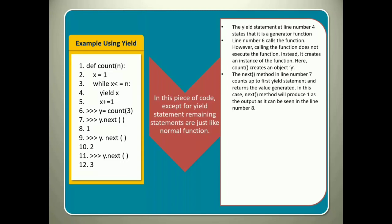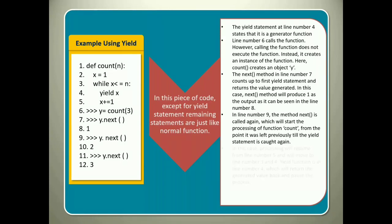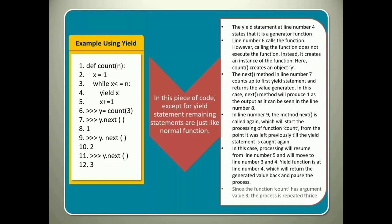The next method in line number 7 counts up to first yield statement and returns the value generated. In this case, next method will produce 1 as the output as you see in the line number 8. In line number 9, the method next method is called again which will start the processing of function count from the point it was left previously till the yield statement is caught again. In this case, processing will resume from line number 5 and will move to line number 3 and 4. You have yield function at line number 4 which will return the generated value back and pause the process. Since the function count has argument value 3, the process is repeated thrice.